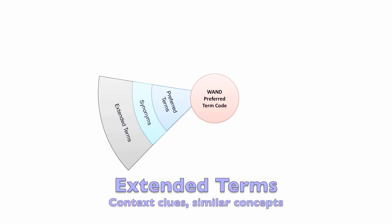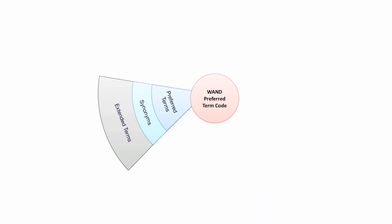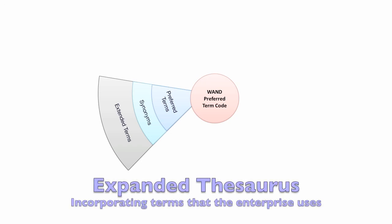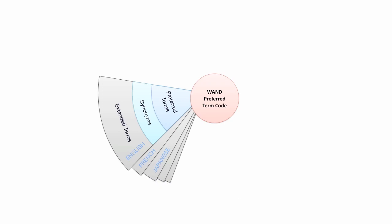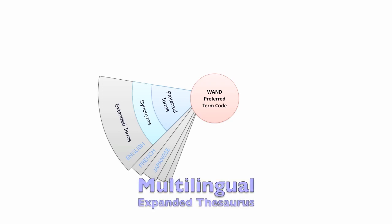We then add extended terms — terms that are not exact synonyms to 'attorneys' but terms that, when used by people, give us a reasonable degree of confidence that people are thinking of the concept 'attorneys.' We now have an expanded thesaurus incorporating terms the enterprise uses. We then translate the preferred terms to 13 different languages and add appropriate levels of synonyms and extended terms, giving us a multilingual expanded thesaurus to index and search documents in multiple languages.